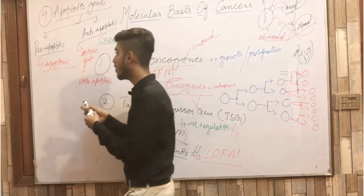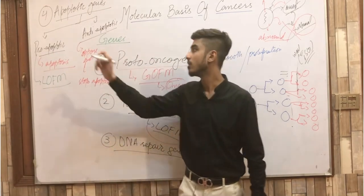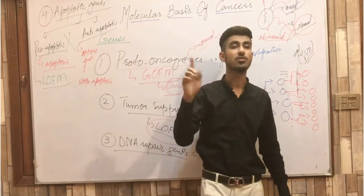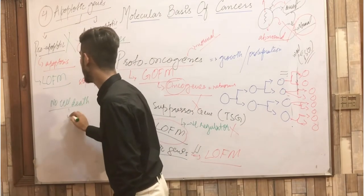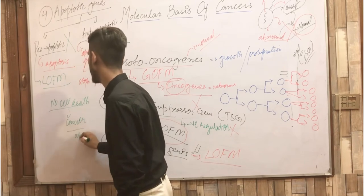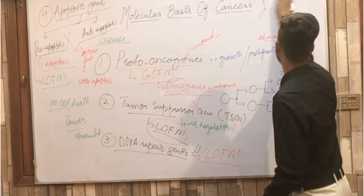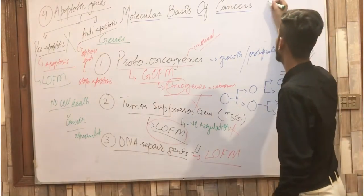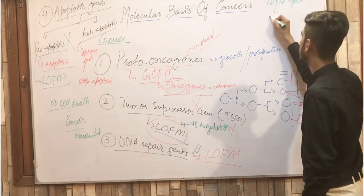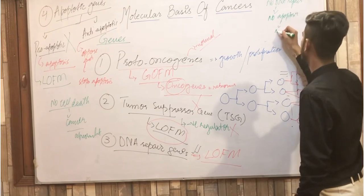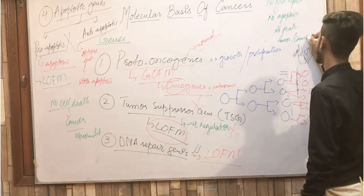With loss of function mutation in pro-apoptotic genes, their function is lost — no apoptosis. The DNA repair genes also carry out DNA repair, and if damage is so severe it cannot be repaired, these genes activate pro-apoptotic genes to carry out apoptosis. With no apoptosis, there is no cell death. No DNA repair means loss of function mutation, and when there is no DNA repair, obviously there is no apoptosis, no death of the cell, and no death of the cell leads to tumor or cancer development.